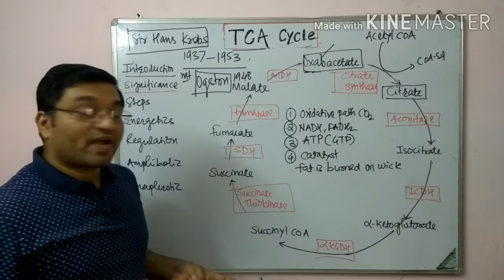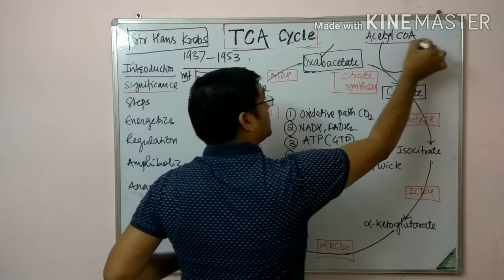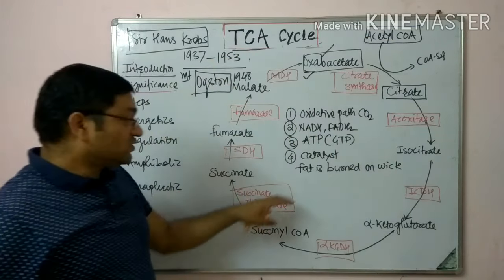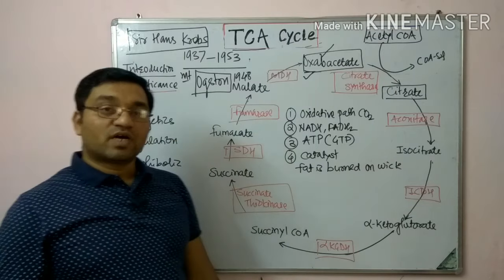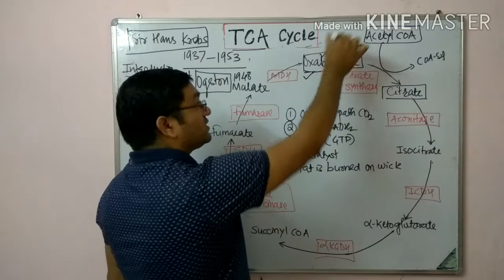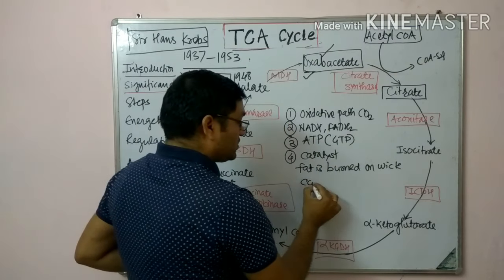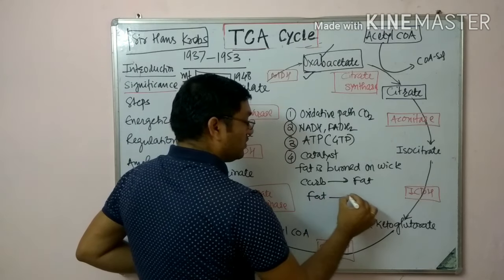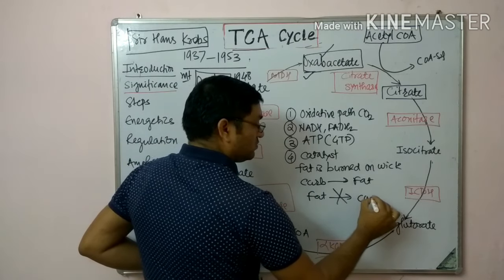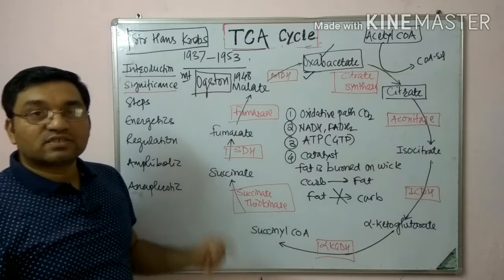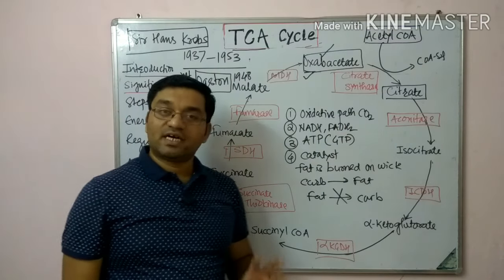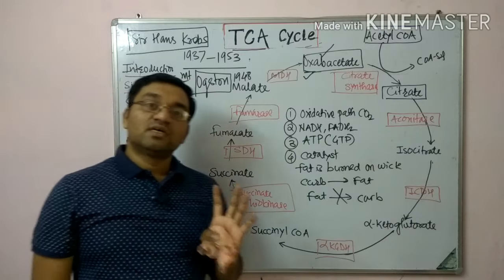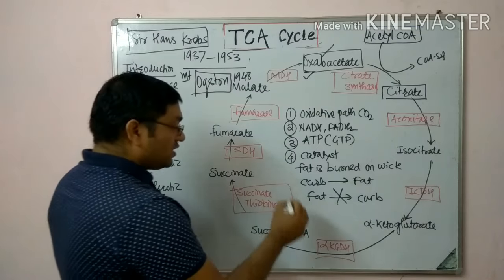For burning of fat, fat is ultimately converted into acetyl coenzyme A, and for oxidation of acetyl CoA, oxaloacetate is required — that's why fat is burned on the wick of carbohydrate. Excess carbohydrate can be converted into fat, but the reversal is not possible because of the irreversible reaction catalyzed by pyruvate dehydrogenase complex.